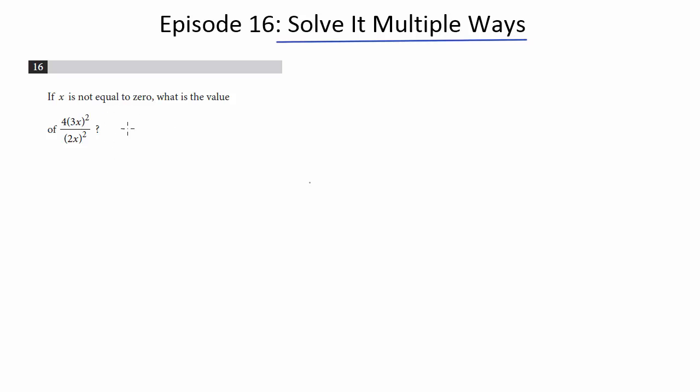So how would that appear on a question like this? Well, one way to do this is just to solve it algebraically. So I have 4 times 3x quantity squared divided by quantity 2x squared. We can just solve this algebraically.